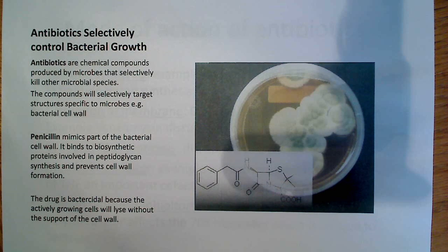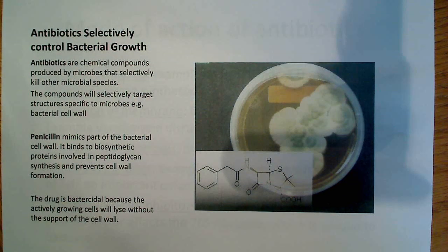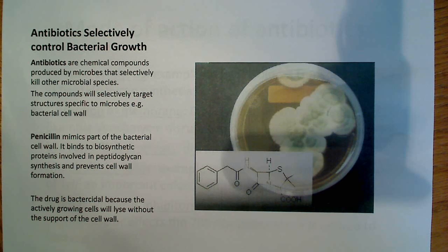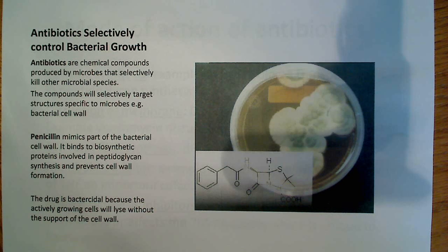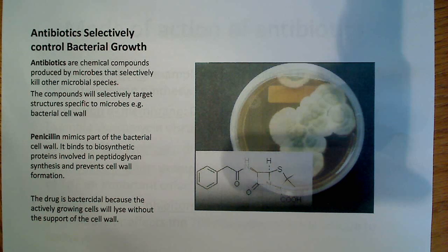A good example of a selective target is the bacterial cell wall. What I have over here is a picture of penicillin, including its molecular structure. Most people know that the discovery of penicillin was by Alexander Fleming in 1928. What's so beneficial about penicillin is that it mimics part of the bacterial cell wall. It binds to the biosynthetic proteins involved in peptidoglycan synthesis and prevents the cell wall from forming properly, making it weaker and easier to burst.